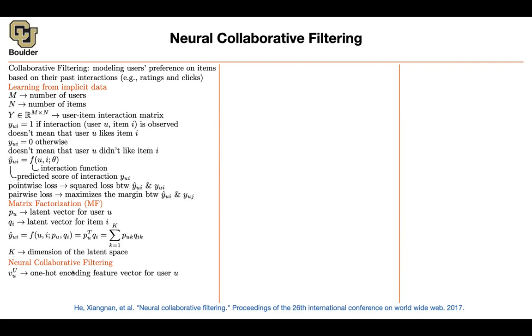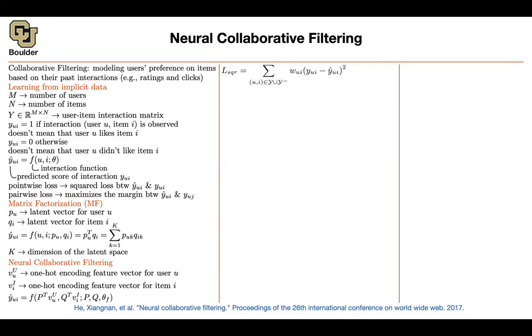For neural collaborative filtering, let's say you have a one-hot encoding for your user. You have a one-hot encoding for your item. If you multiply a one-hot code by a matrix, it's going to pick either a column or a row. So it doesn't really matter whether you're going to multiply from right to left. So it's basically the same as p_u and q_i. All you're doing is changing the f function.